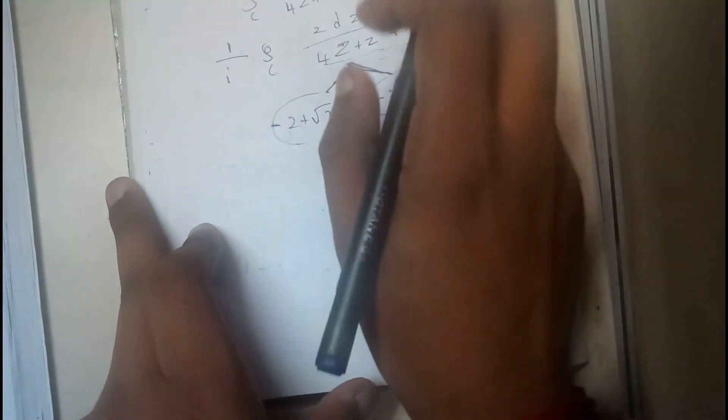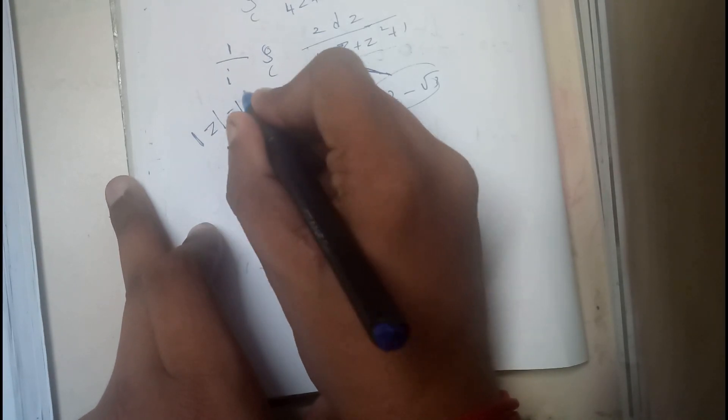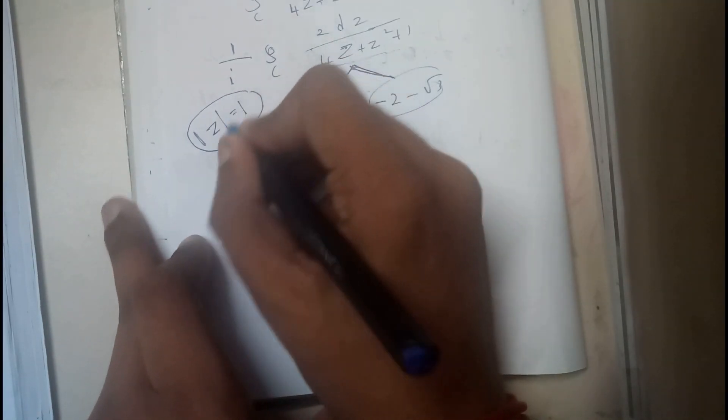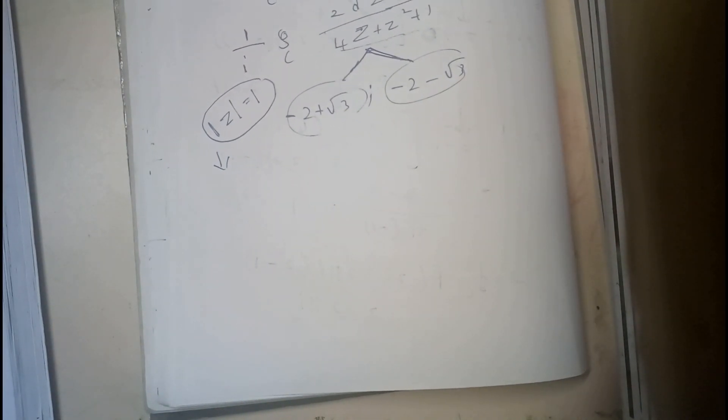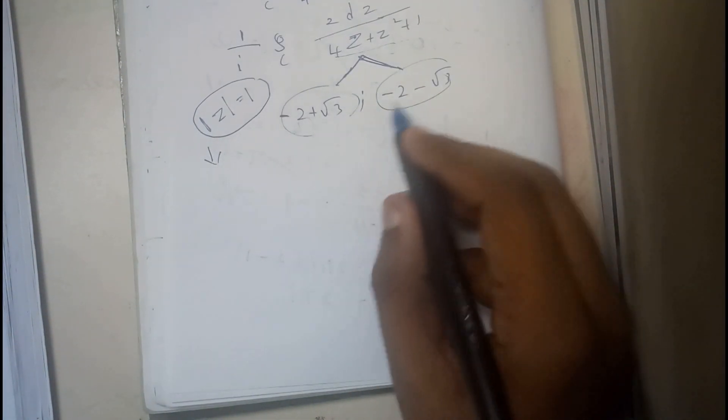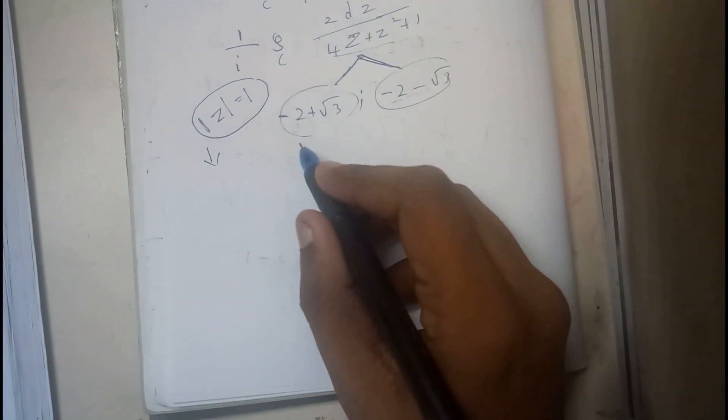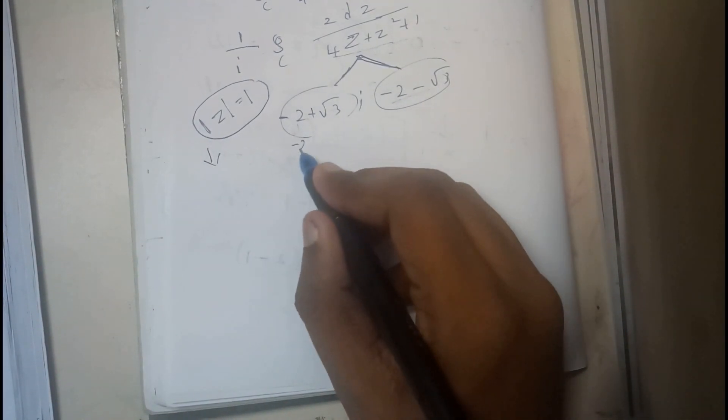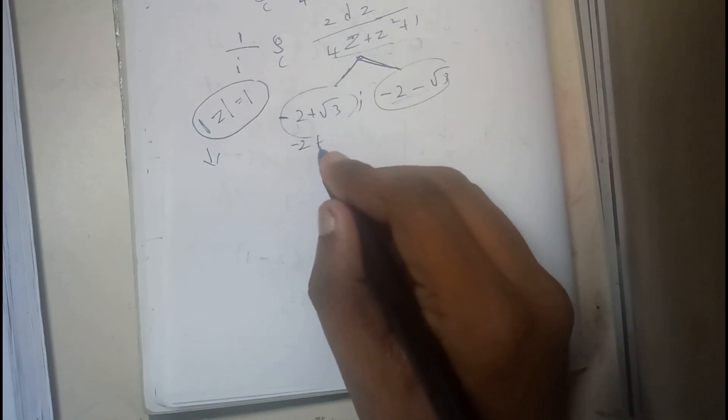So basically for cos(θ) and sin(θ) problems, remember that |z| equals 1. So the value should be less than 1 at maximum. So now verify these two: which of the following is less than 1? So |z|, minus 2 plus root 3 value is 1.7.